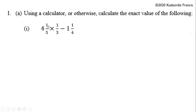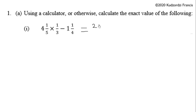This is the first question — we are trying to find the exact value of this fraction. What we need to do is rewrite this fraction as an improper fraction. We multiply 4 by 5 to get 20, plus 1 which is 21, all over 5, and we multiply by 1 over 3.